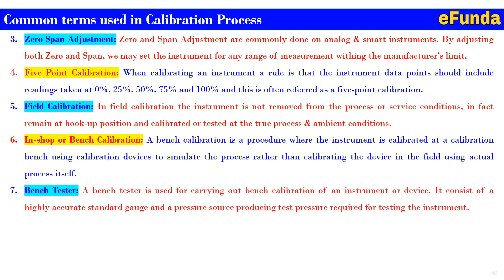Seventh is the bench tester, which is used for carrying out bench calibration of an instrument or device. It consists of a highly accurate standard gauge and a pressure source producing the test pressure required for the instrument. Most benches are fabricated on the job site by the instrument technician, while some are ordered as a complete system from the vendor as a ready-made test bench setup.